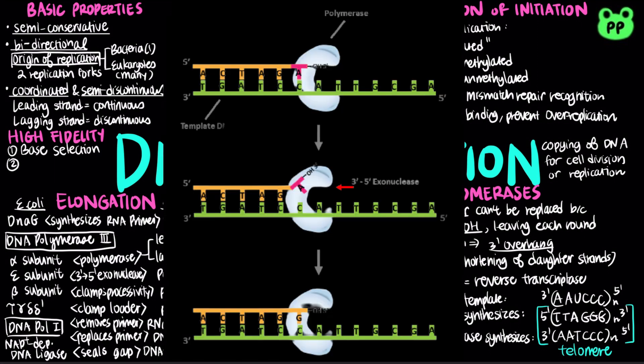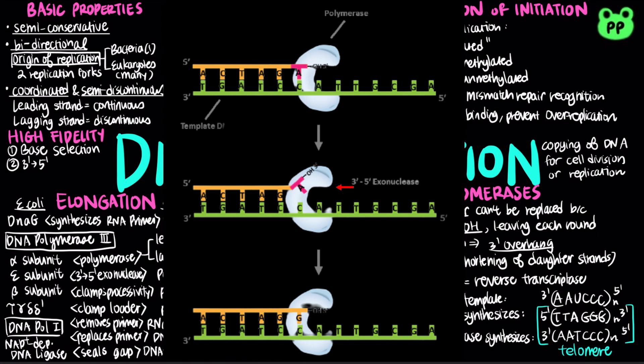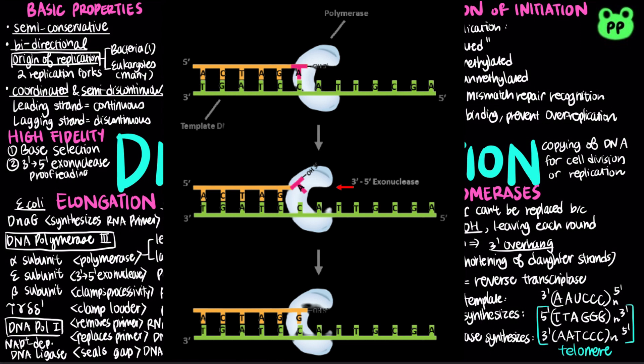The second mechanism involves the 3' to 5' exonuclease activity in the primary DNA polymerases, which double-checks each nucleotide after it is added and removes mismatched nucleotides.